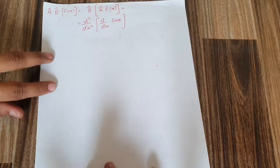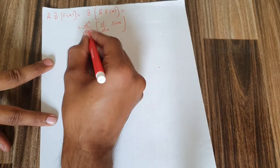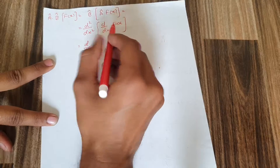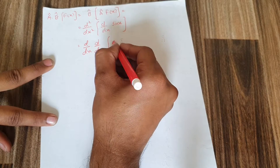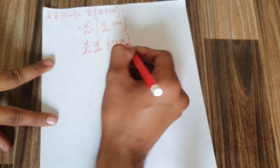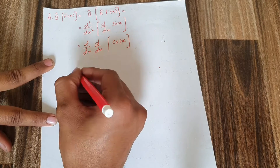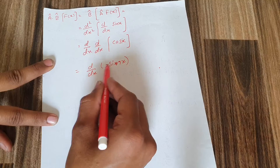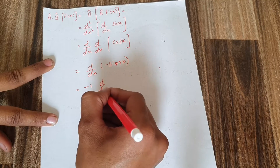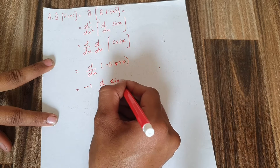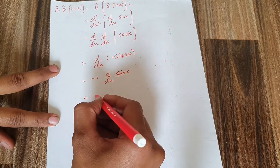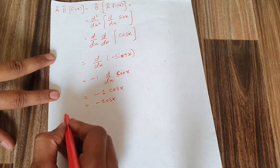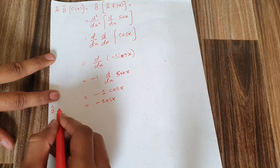Breaking it down as d/dx · d/dx, the derivative of sin(x) equals cos(x). The derivative of cos(x) equals minus sin(x). The minus one goes outside, giving minus one · d/dx · sin(x). The derivative of sin(x) again is cos(x), so the answer is minus one times cos(x), which equals minus cos(x).